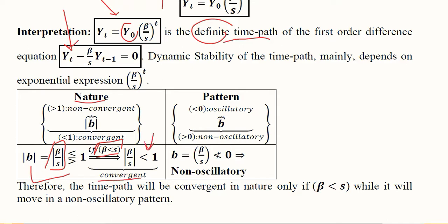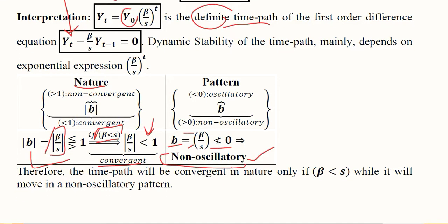In the pattern situation, beta is divided by s, so it is definitely a ratio of two positive numbers that cannot be negative. A non-negative value of b suggests that we have a non-oscillatory time path.